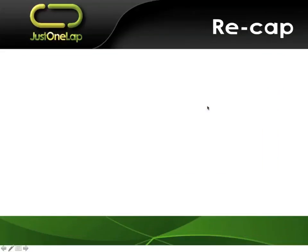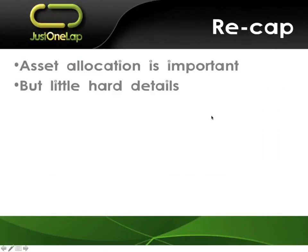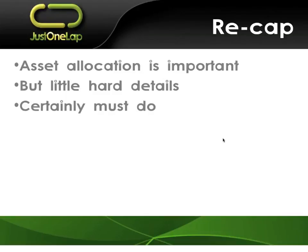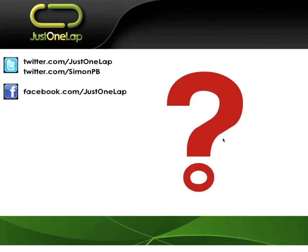Quick recap: asset allocation is important but there are little hard details as to what, where, and how much. If you go chat to expert financial advisors they'll talk you through asset allocation, but I'm not sure there's that fancy easy formula - plug it in, boom, here come the answers. Certainly it's a must-do: we must spread across those assets. I'm currently light on property and debt but will pick up property in time and probably pick up some debt in the next five or ten years.